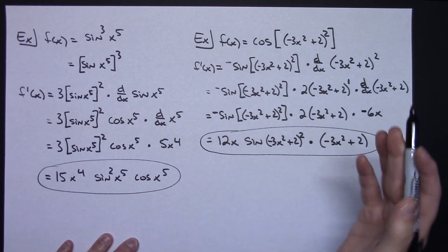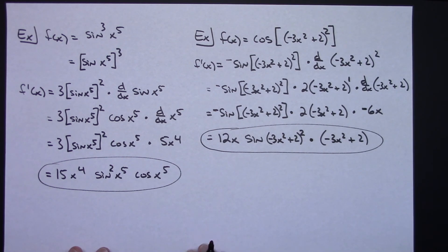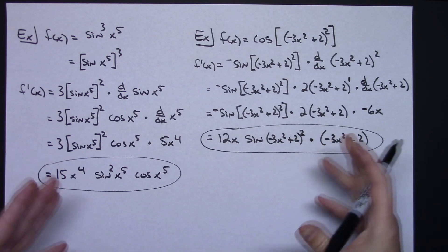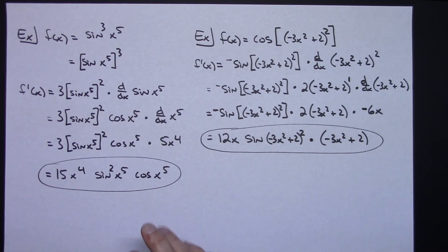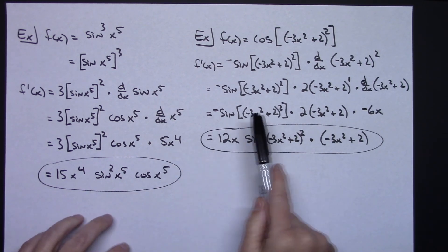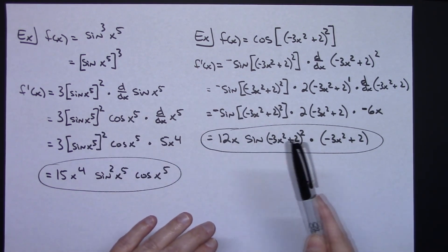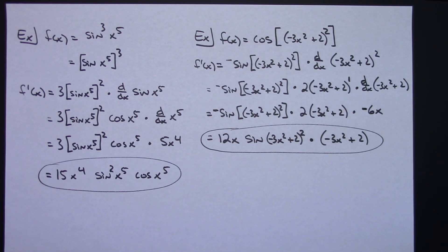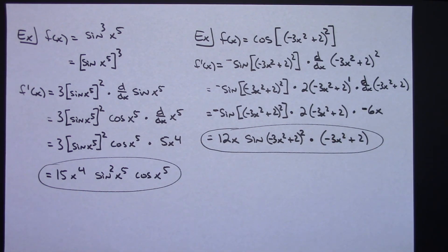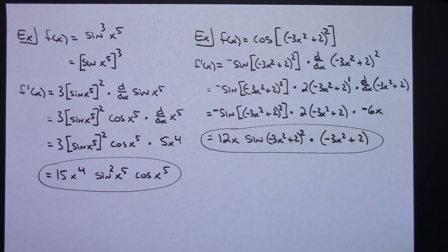Thanks for watching — four examples dealing with trig functions that included chain rule, with the last two examples having more than one chain. My number one suggestion: always use d/dx notation every time you need to take the derivative of an inside function. If the inside function is itself a composite function, that notation keeps track of how many chains you need to apply.